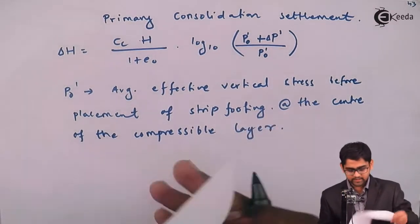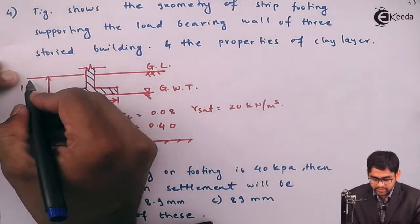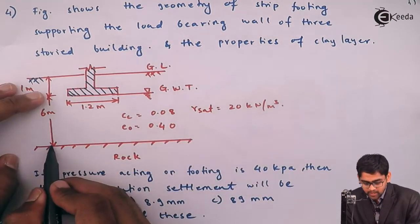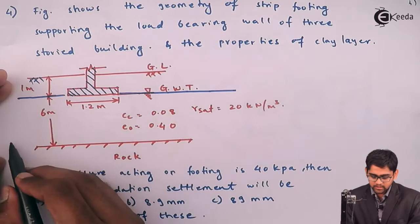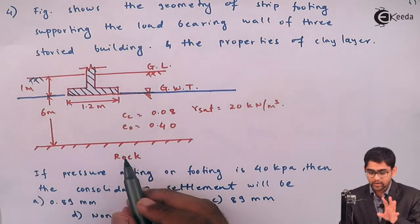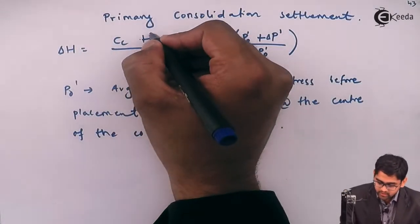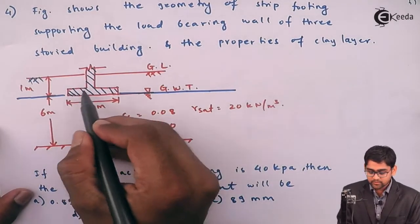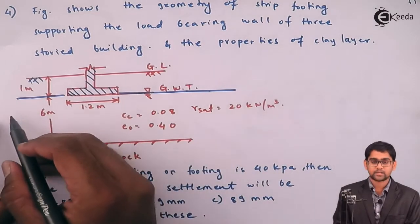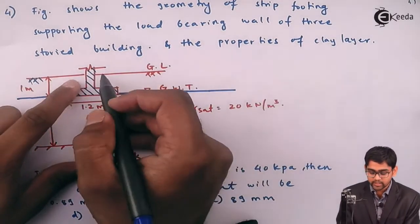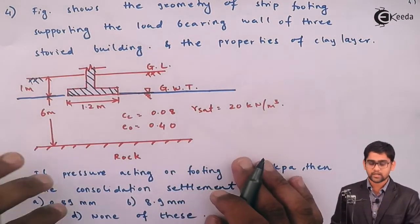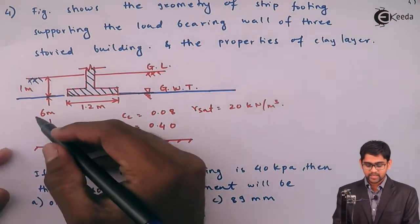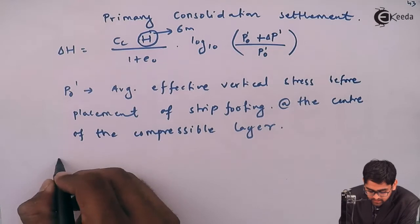The total thickness of the clay layer is 7 metres, but the foundation is placed 1 metre below the clay layer. Therefore, H to be used is 6 metres, not 7 metres. The footing is placed 1 metre below the ground level, so only the remaining 6-metre thickness of the compressible layer is considered. The initial effective vertical stress P0' is calculated at the centre of the compressible layer, which is at 3 metres from the footing base.